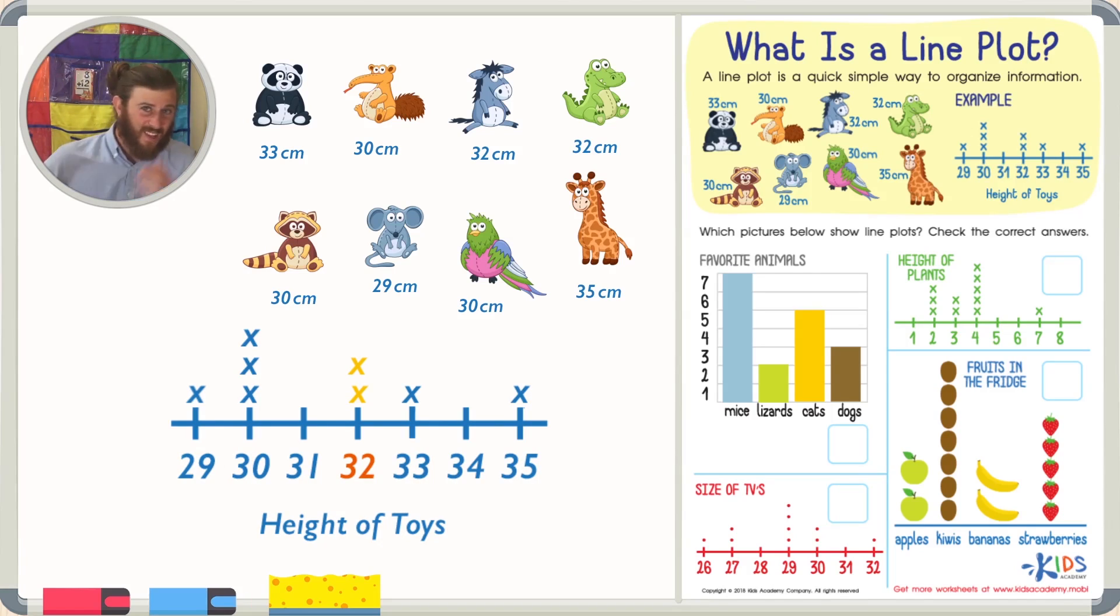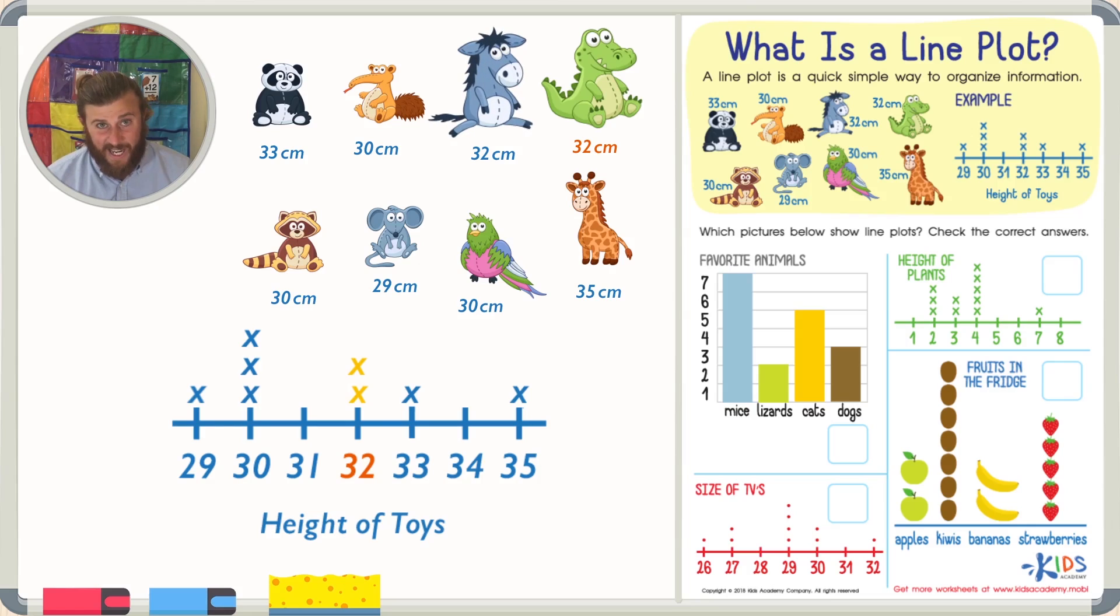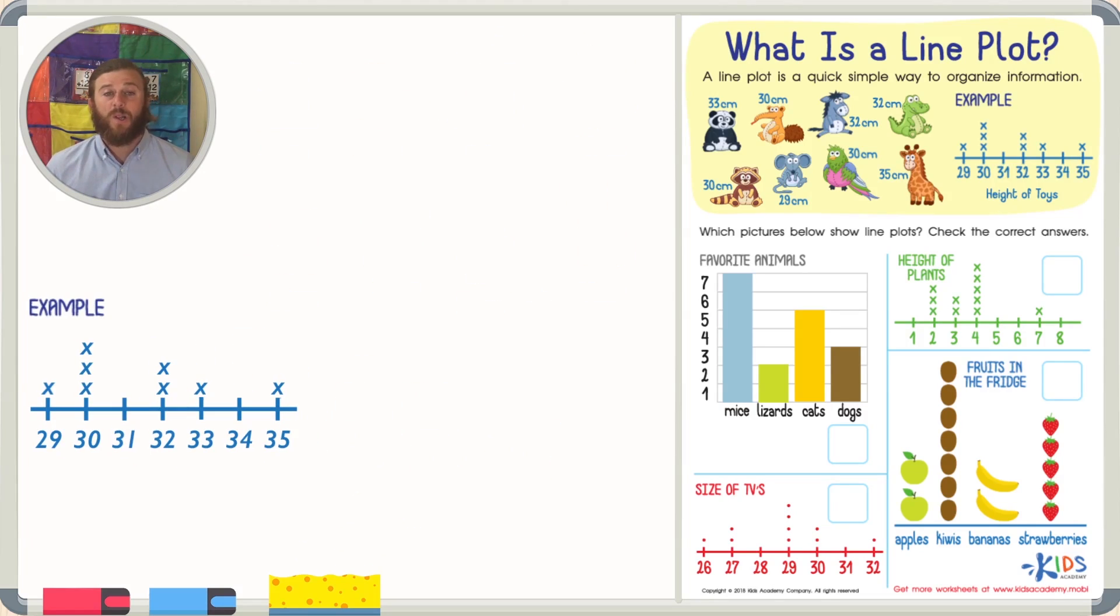Well, let's go over to 32 centimeters and see. Well, I see that there are two X's, so I know that there are two stuffed animals that are 32 centimeters tall. And if we go back and we look at our picture, we can see that the alligator is 32 centimeters tall and so is the donkey.